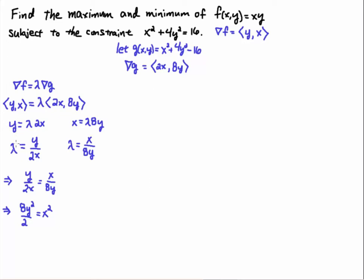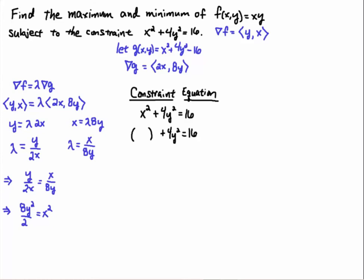Solving for lambda from the first equation gives lambda = y over 2x. Solving for lambda from the second equation gives lambda = x over 8y. Since both expressions equal lambda, we set them equal to each other. Cross-multiplying gives 8y squared over 2 = x squared. Since 8 divided by 2 is 4, we'll simplify that to x squared = 4y squared in a moment.